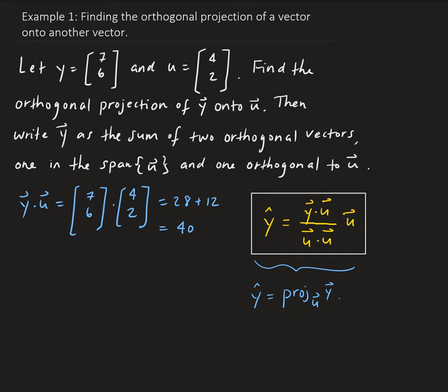Next, we're going to find the dot product of u with itself. So we have [4, 2] dotted with [4, 2]. This gives us 16 plus 4, which gives us 20.